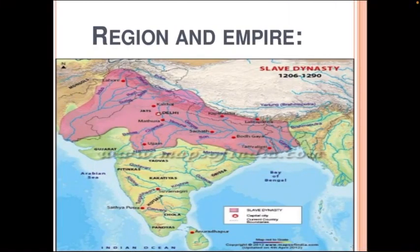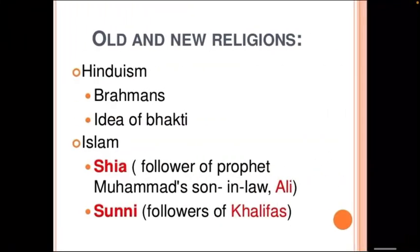There were different regions and empires that emerged. There were different religions — Hinduism, under which came Brahmanas and the idea of Bhakti. Islam was divided into two major categories: Shia, followers of Prophet Muhammad's son-in-law Ali, and Sunnis, the followers of the Khalifas.